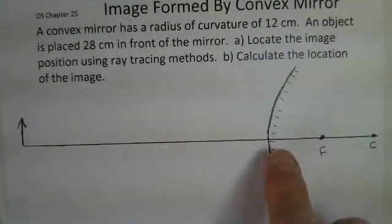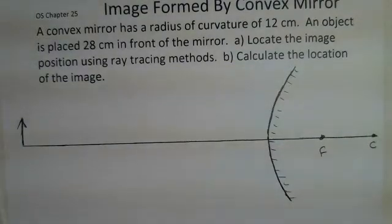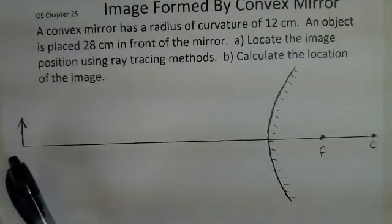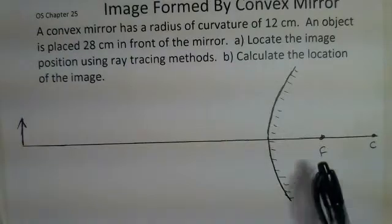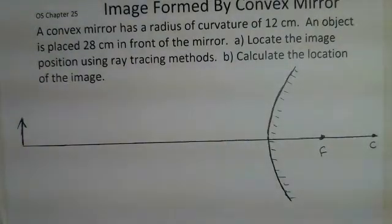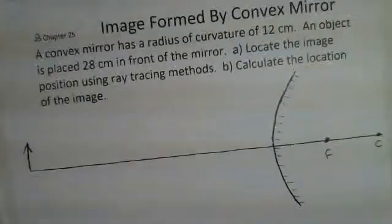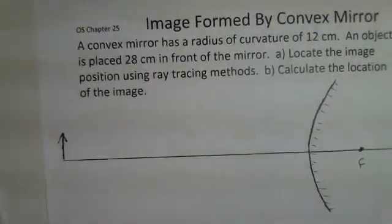The convex mirror, the portion of the mirror on the optics axis is closer to the object than the other sections of the mirror, bowed outward towards the object. We have a principal axis with some object located off to the left here.